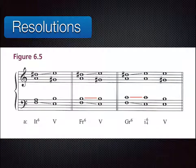Augmented six chords have a dominant leading tone — a half step below the dominant — and a dominant Phrygian leading tone — a half step above the dominant. These notes expand outward from the augmented sixth to a perfect octave, which is the dominant. That is why augmented six chords are so effective: half steps have more pulling tendency than whole steps. Augmented six chords therefore have more pull to the dominant than other predominant chords.